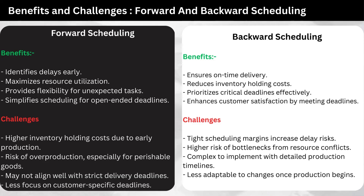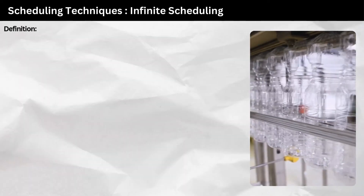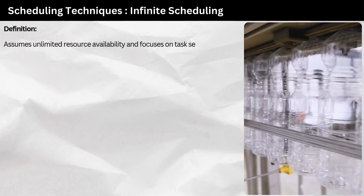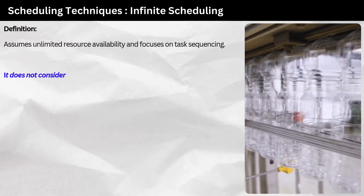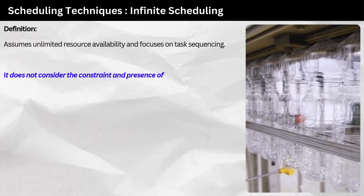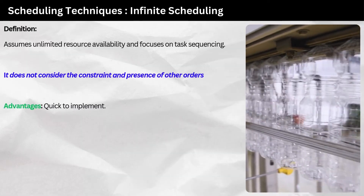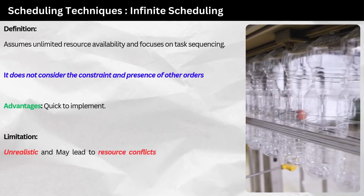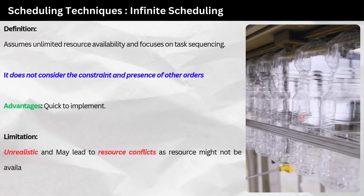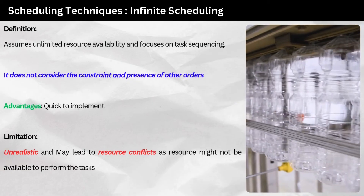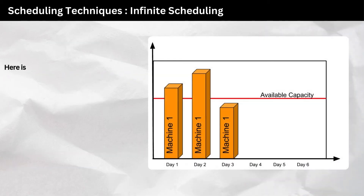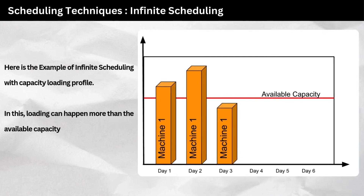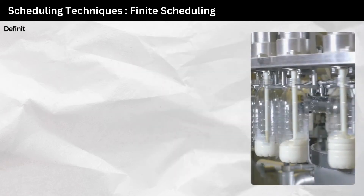Infinite scheduling — definition: assumes unlimited resource availability and focuses on task sequencing. It does not consider constraints or the presence of other orders. Advantage: quick to implement. Limitation: unrealistic and may lead to resource conflicts, as resources might not be available to perform the tasks. The example shows infinite scheduling with a capacity loading profile, where loading can exceed available capacity.